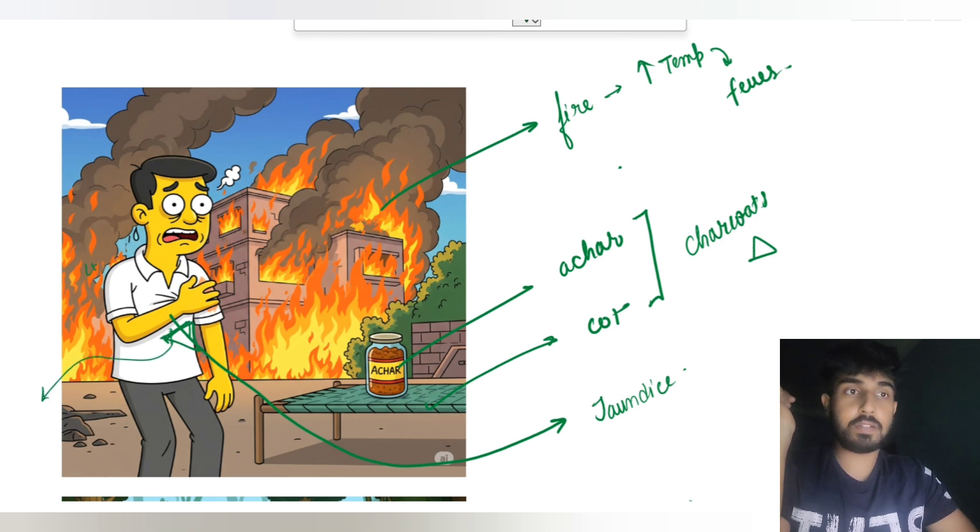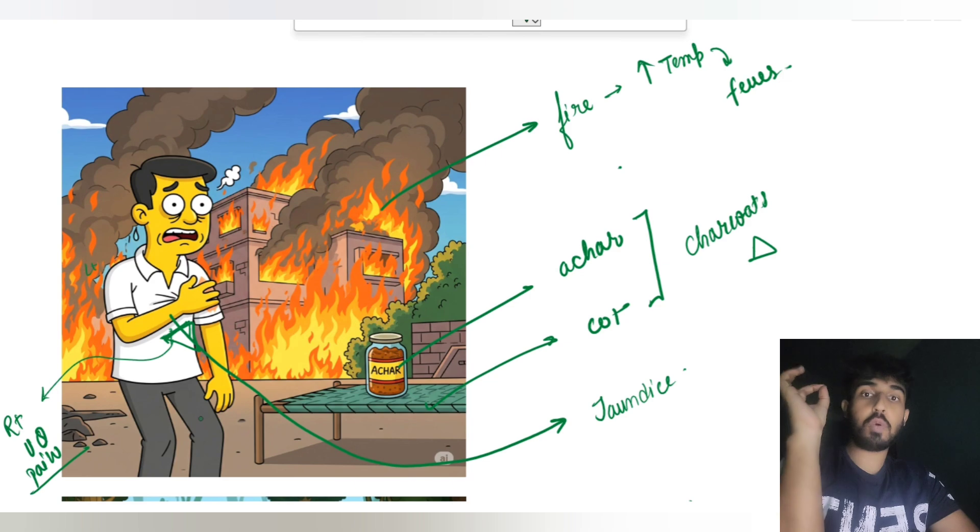Here, liver is our representation of jaundice. And this is our representation of right upper quadrant pain. Right upper quadrant pain, right?